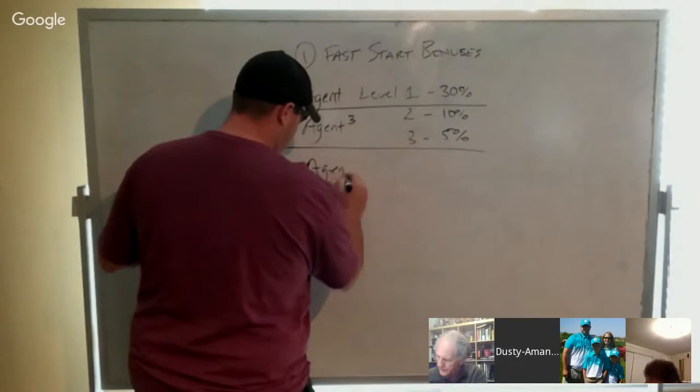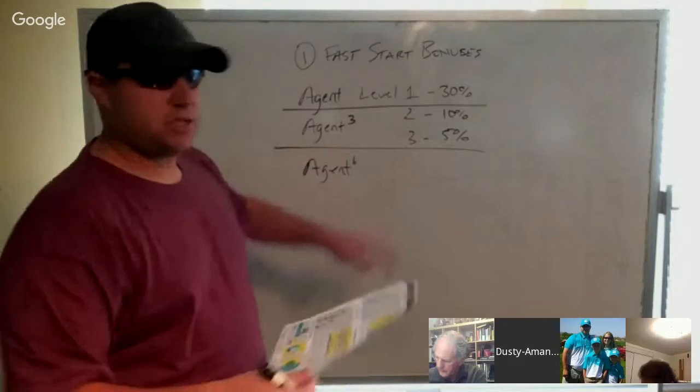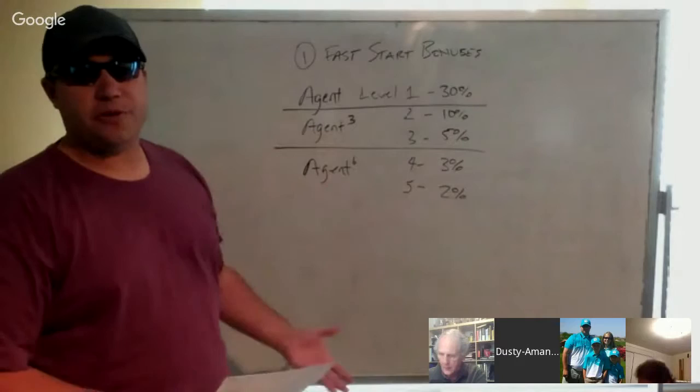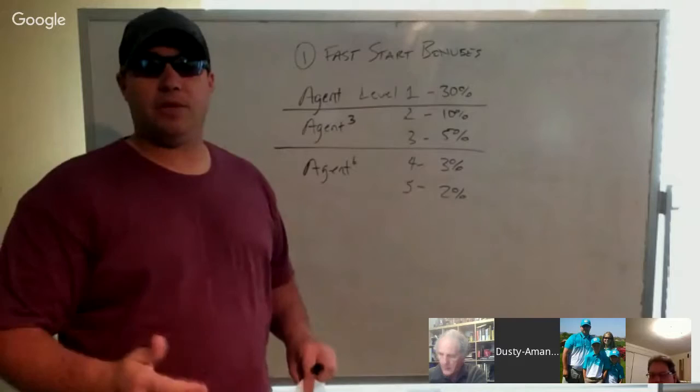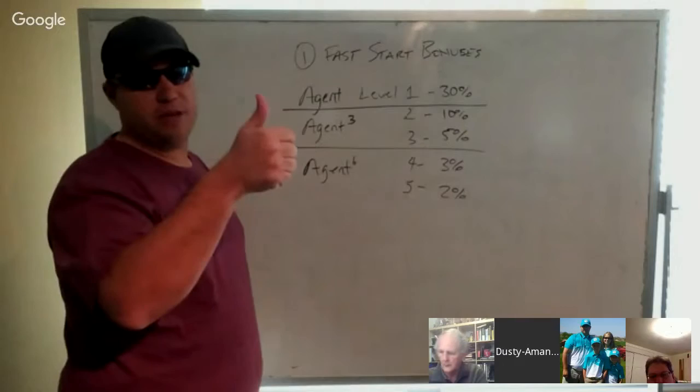At agent six, you can literally max out our comp plan. All you need is six personally enrolled to max out the whole comp plan. Agent six is just six personals. That opens up the fourth and the fifth levels at 3% fast start overrides and 2% fast start overrides. I'm telling you, this is going to be a very simple comp plan as we go through it. Everything's based on our agent, agent three, and agent six. The majority of our comp plan comes straight into those. Six people maxes out everything. Are we good on that? Give me a thumbs up.